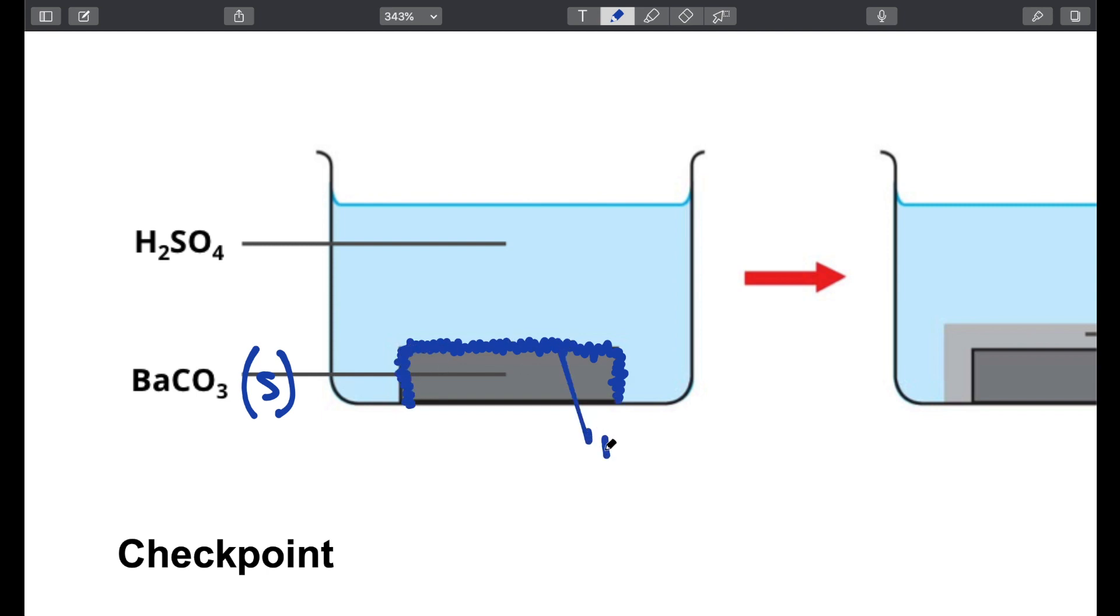And you form barium sulfate here. The barium sulfate is also in the solid state and it coats the starting material which is also in the solid state. And this coating, the insoluble coating, will prevent further reaction between the acid and the carbonate.